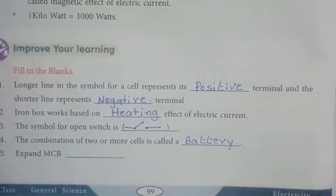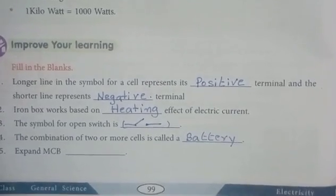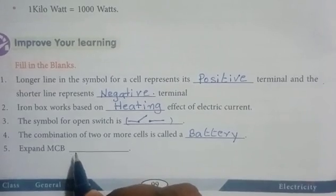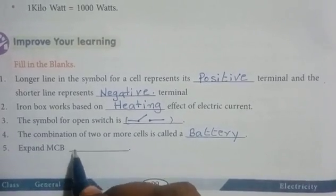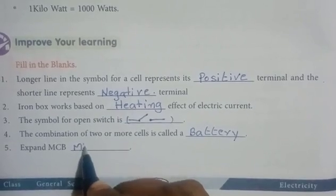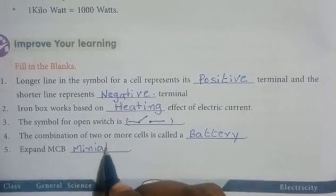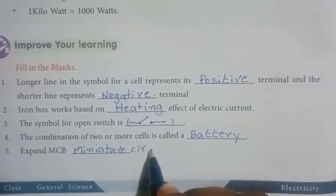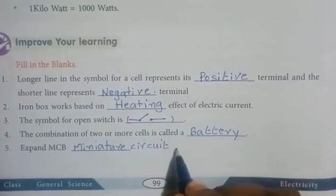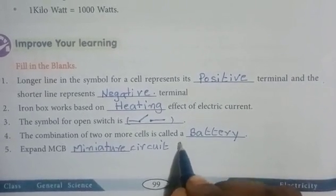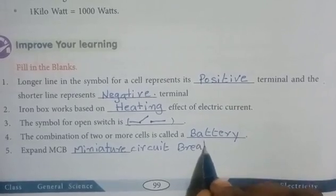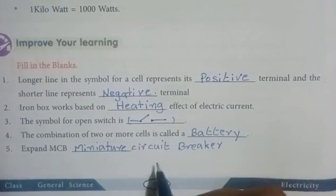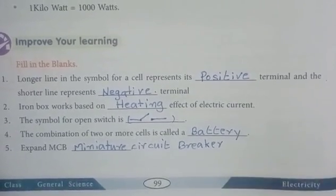Expand MCB. MCB means Miniature Circuit Breaker. M means Miniature, C means Circuit, B means Breaker.